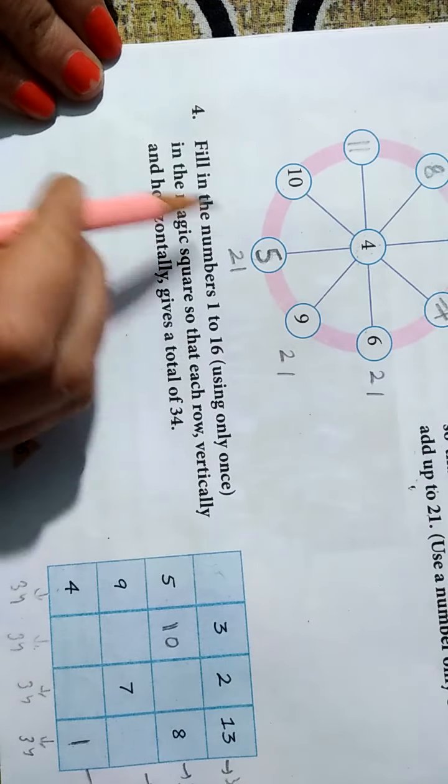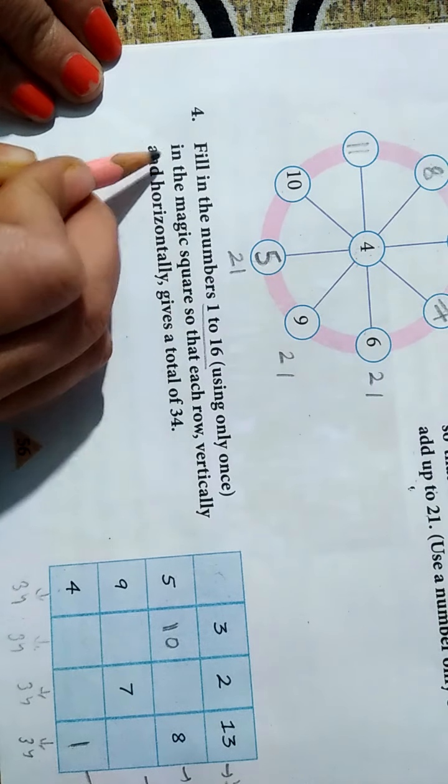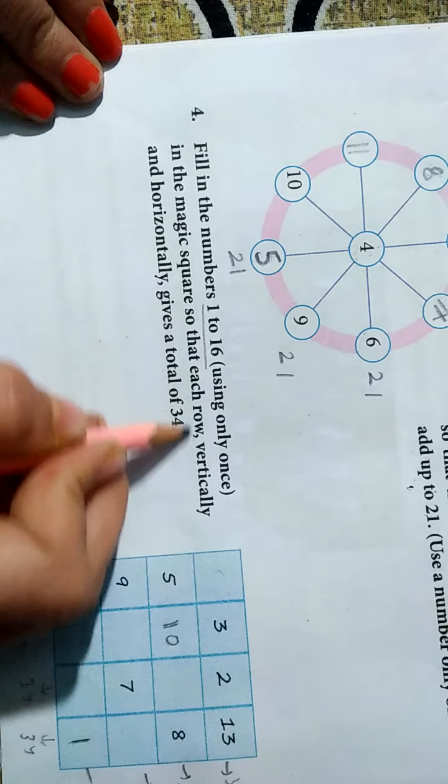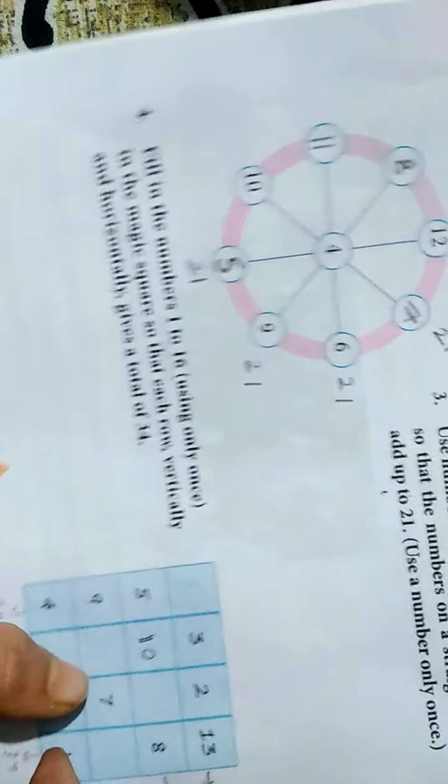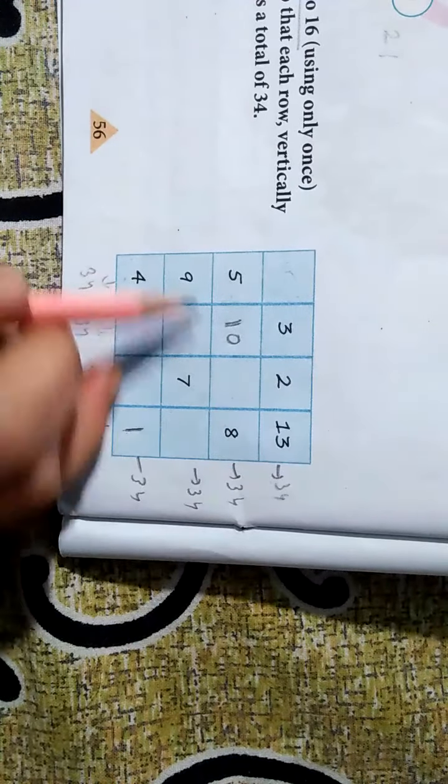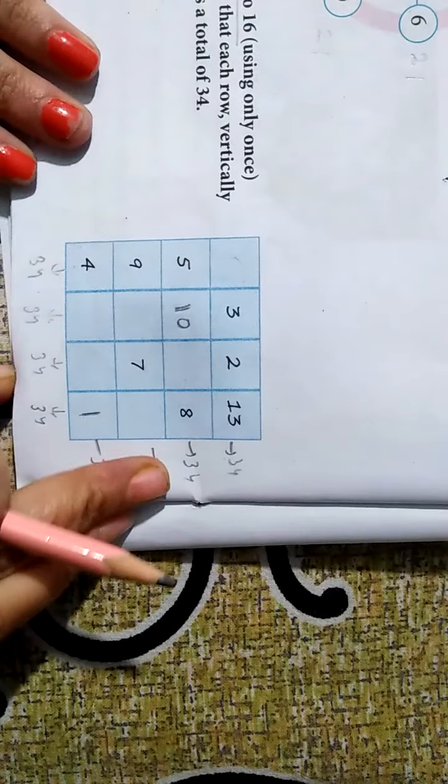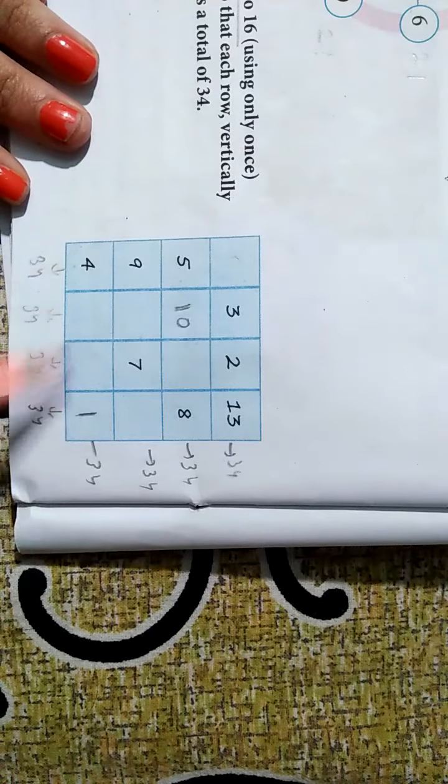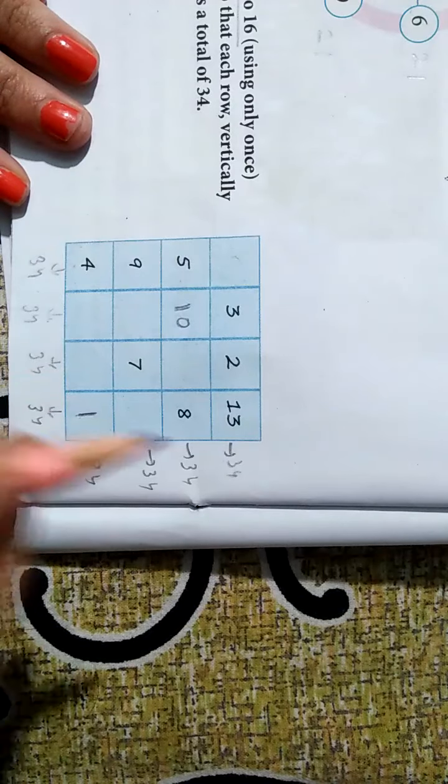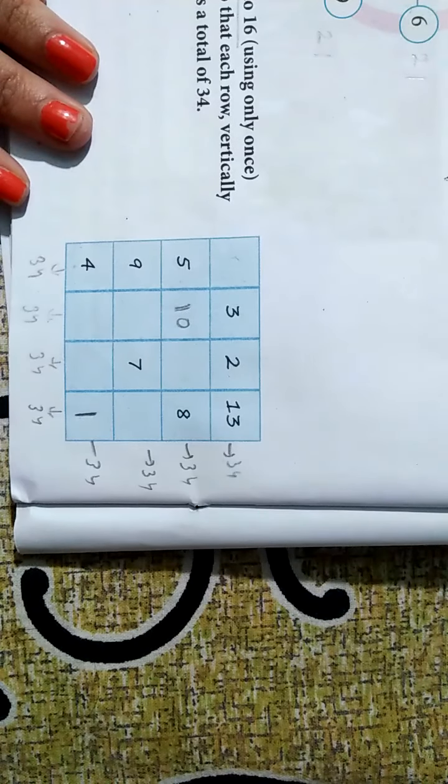Now next question. Fill in the number 1 to 16 in the magic square so that each row vertically and horizontally gives a total of 34. Simple si baat hai. 1 se 16 fill karna hai. Aise ko add karna hai tab bhi 34. Upar se niche ko 34, 34, 34, 34. Dekho, one is missing. To corner pe one likh diya maine. Isko maine one place de diya.